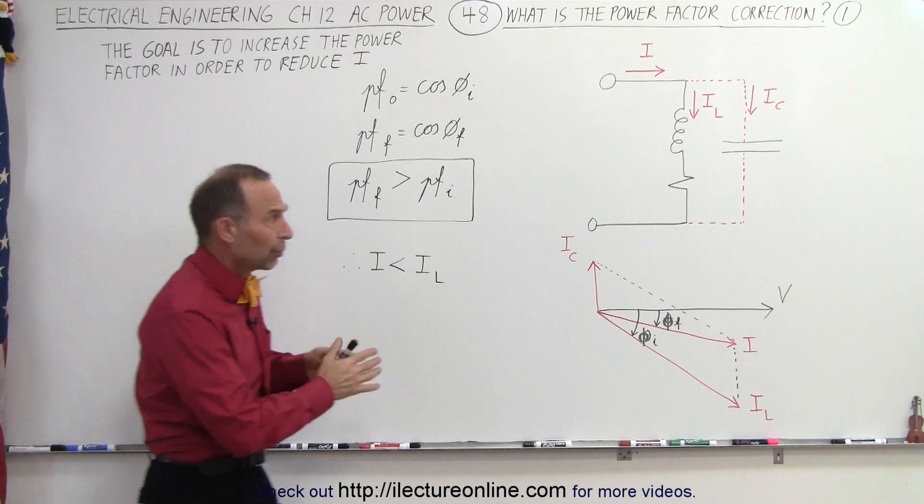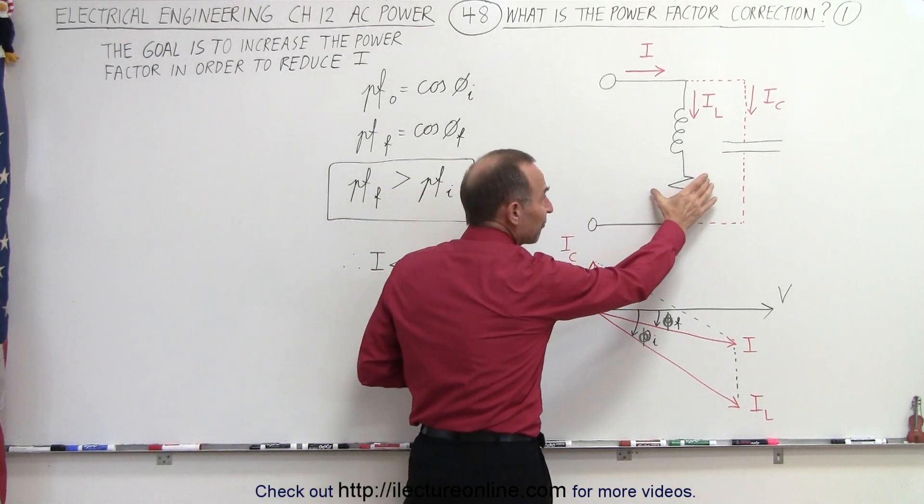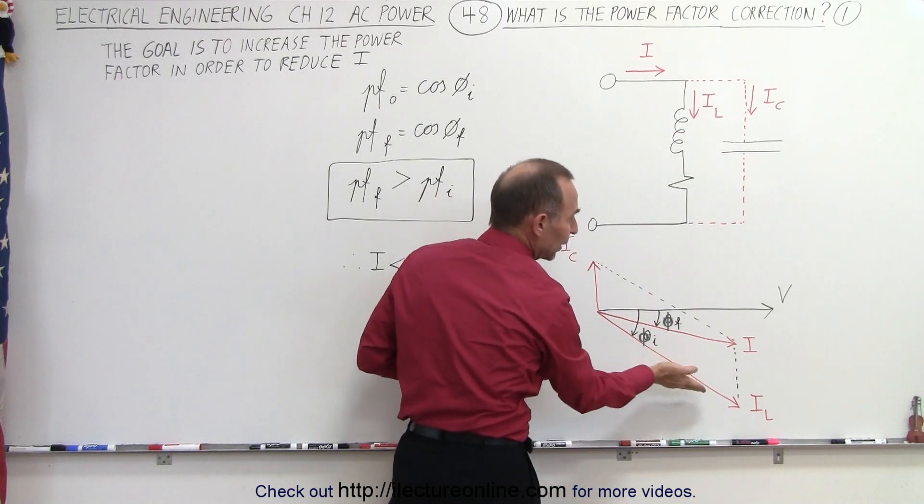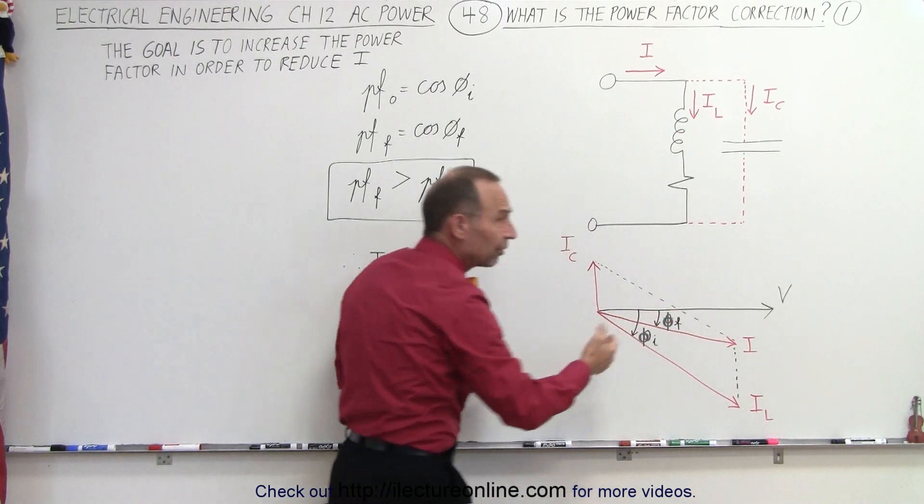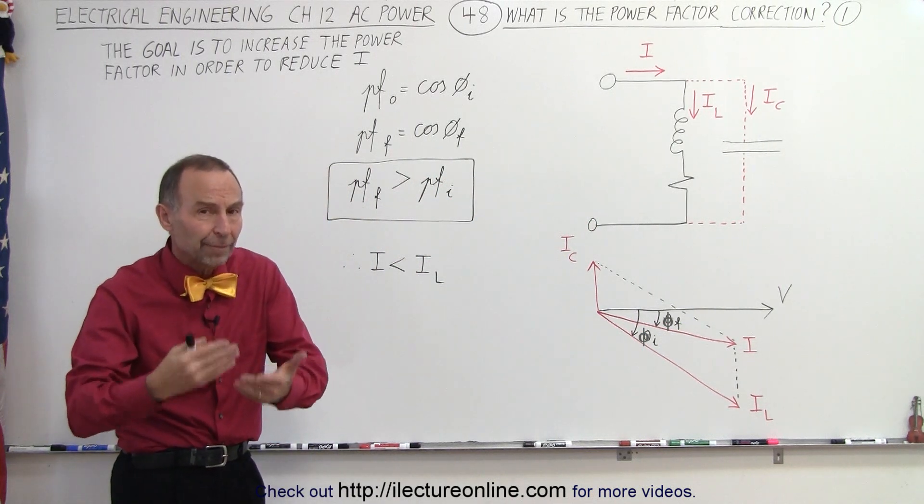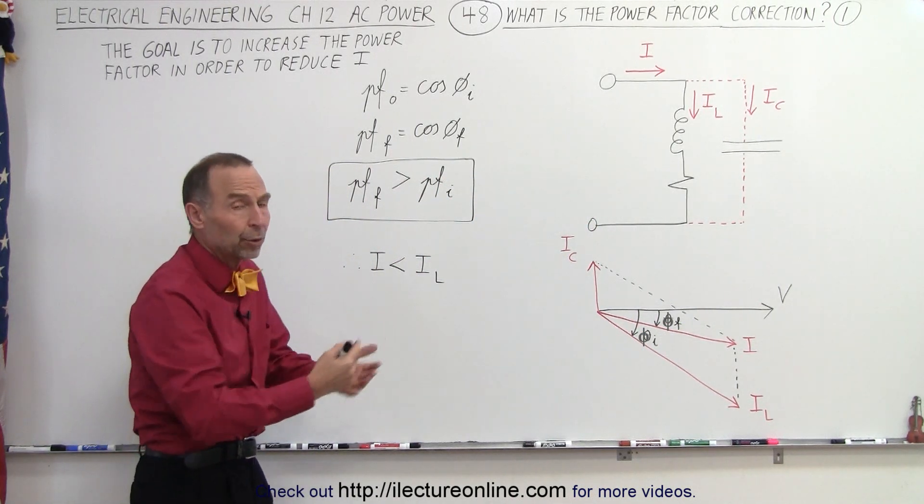Therefore, the greater the current requirement to make the load work. In other words, the power requirement of the load is going to be a fixed amount because of the resistance in the load. If we had a large phase angle between the current and the voltage, meaning a smaller power factor, we would require more current to provide the power required by the load.